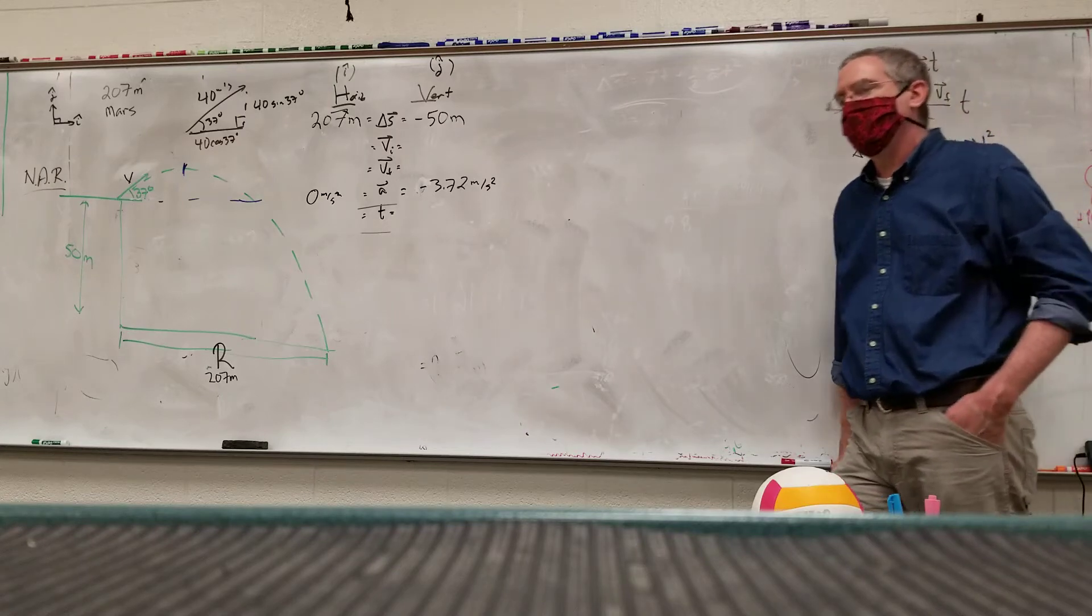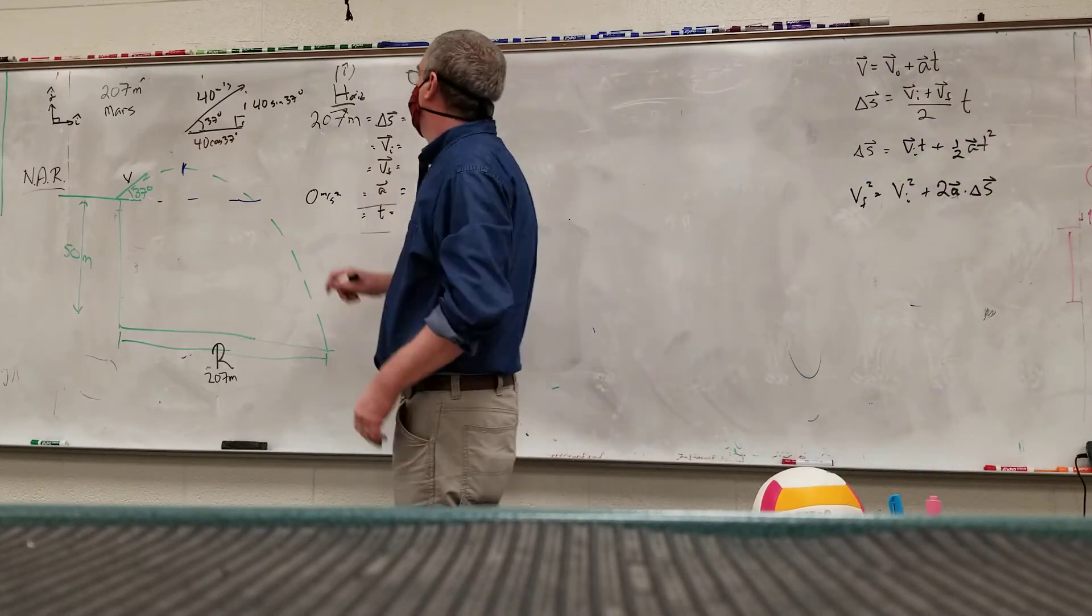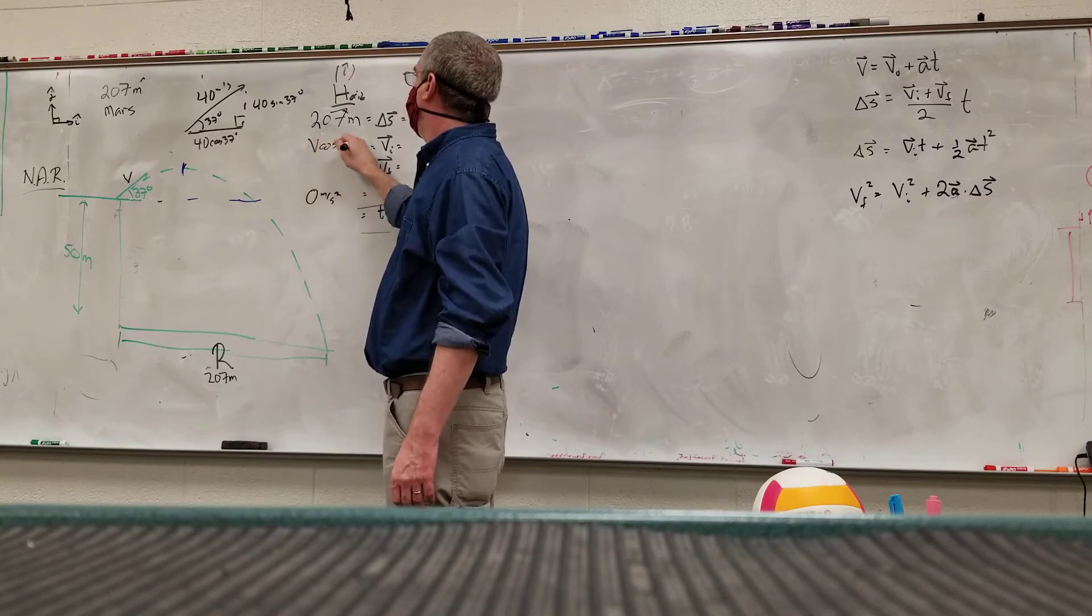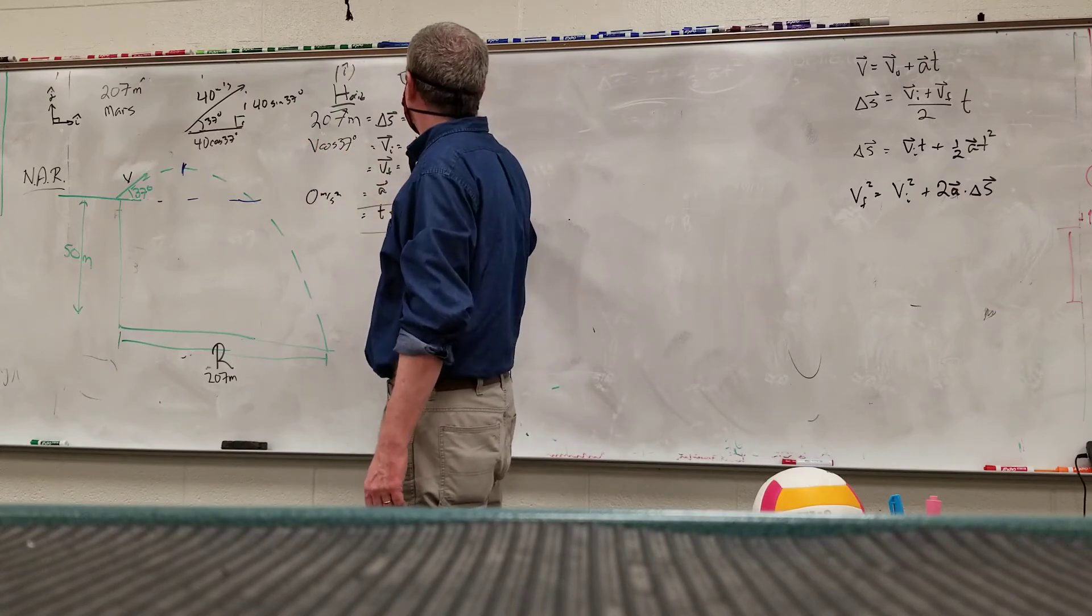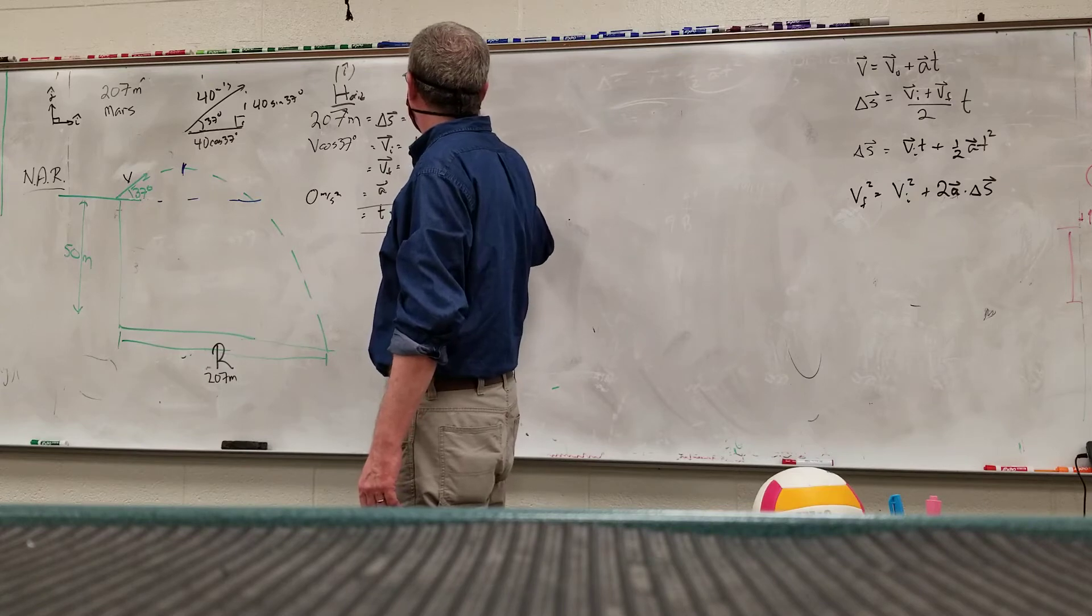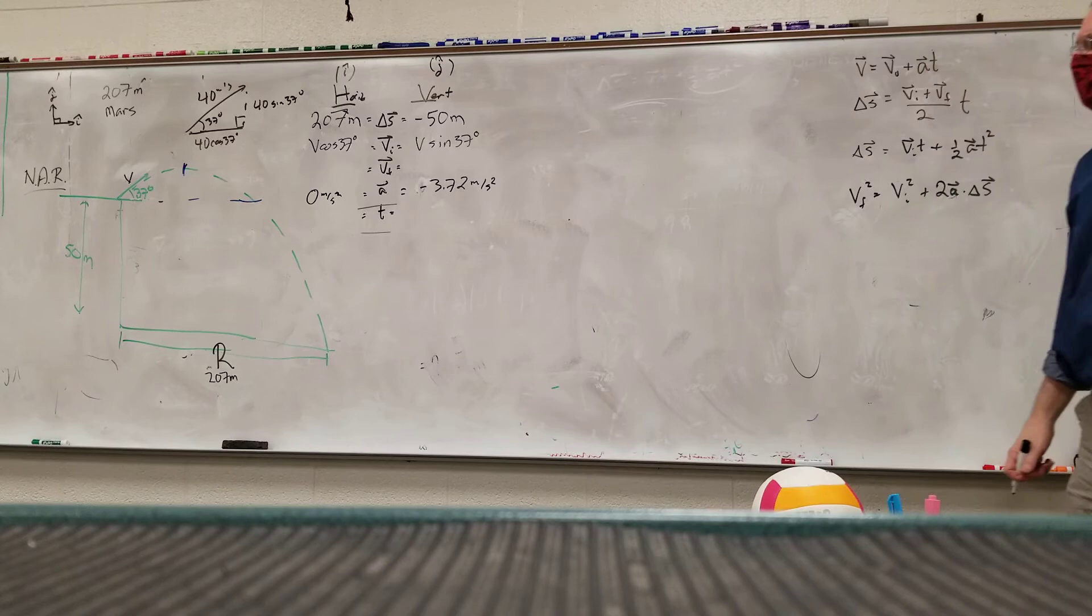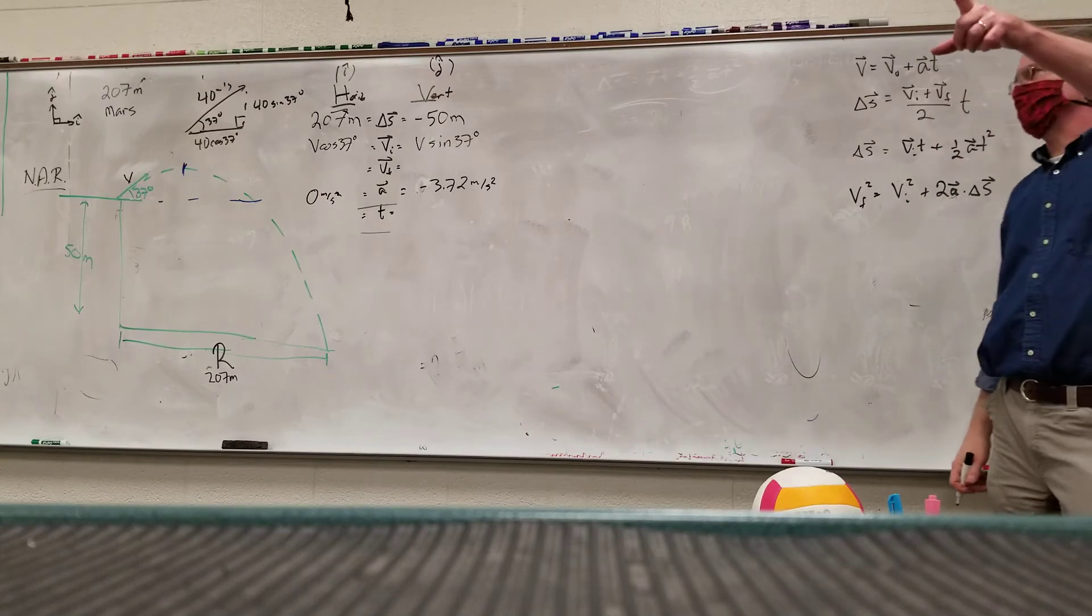V times cosine of 37. This is V sine. I also don't want to tap into something that you just said.